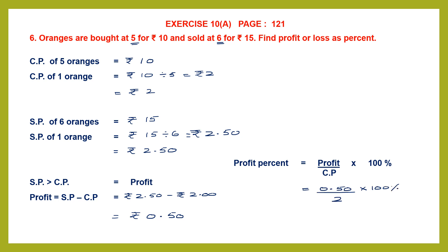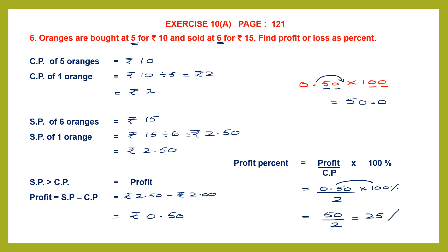Let's work out 0.50 into 100 separately. Multiplying a decimal number by 100 means the decimal point moves two places to the right. So 0.50 into 100 is 50. Now we have 50 divided by 2. 50 divided by 2 is 25, and since we're finding the percent, the answer is 25 percent. So the profit percent is 25 percent. That is our answer.